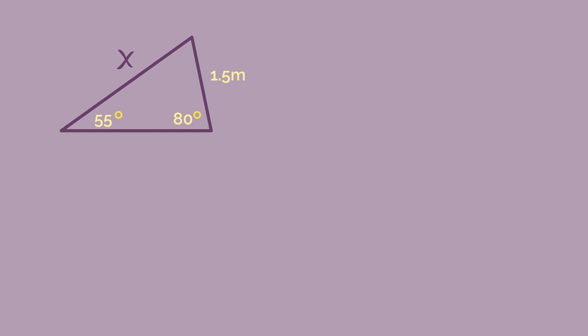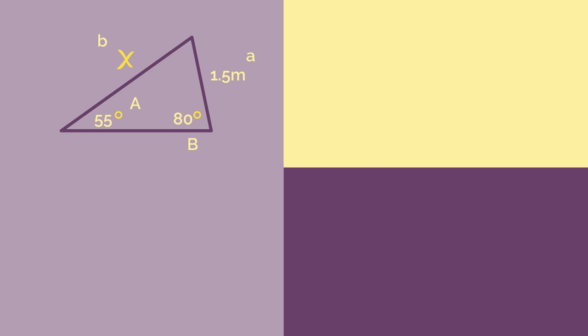Start by labeling the sides as a and b and the angles as capital A and capital B. So let's call 1.5 centimeters side a, 55 degrees must be angle A, and so then 80 degrees is angle B, which means the missing side x is little b.